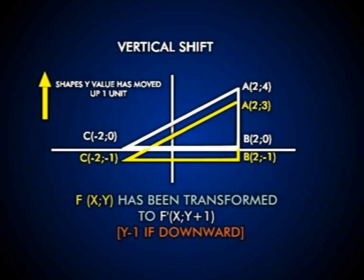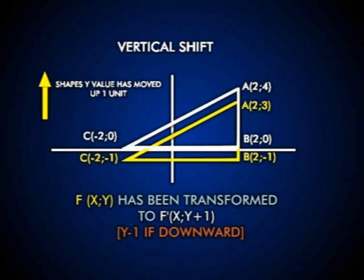That means my translation in this case will read: F has become F'(x, y+1). My x value has stayed the same; my y value has been increased by 1. When shifting any graph or shape upward, the translation reads F(x, y+value), and if it's moving downward, the translation reads F(x, y−value). That value is the amount by which it moves up or down.